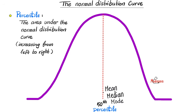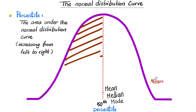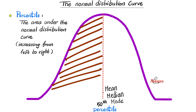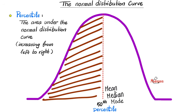If you remember calculus, about half of calculus was about measuring the area under the curve. The area under the normal distribution curve is the percentile. So if I am shading this area under the curve, how much of the area is this compared to the total curve? If you say 50%, you're absolutely correct. Therefore, this line represents the 50th percentile.